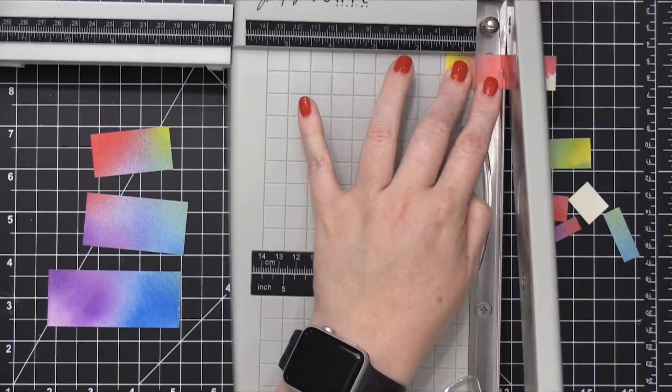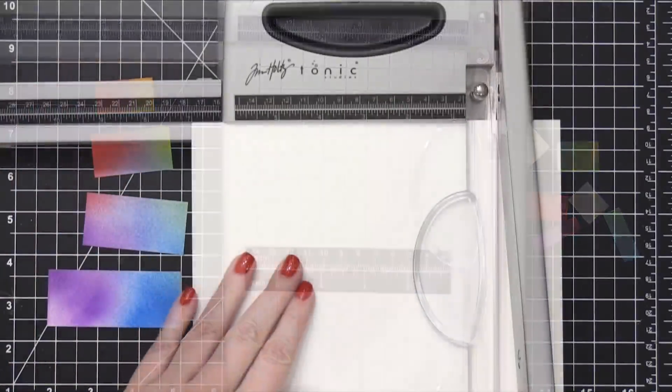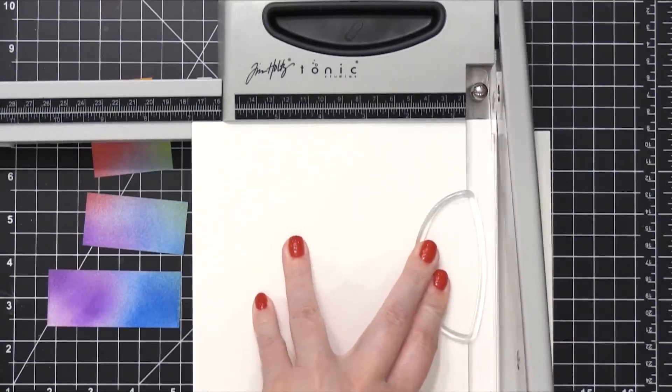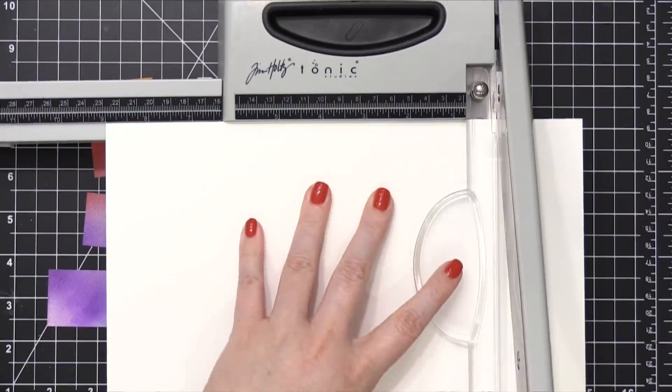So after I had all of the different layers of the birthday cake cut, I then prepared my card base. Now because this cake is going to be very tall, I decided I better do a very tall and skinny card.